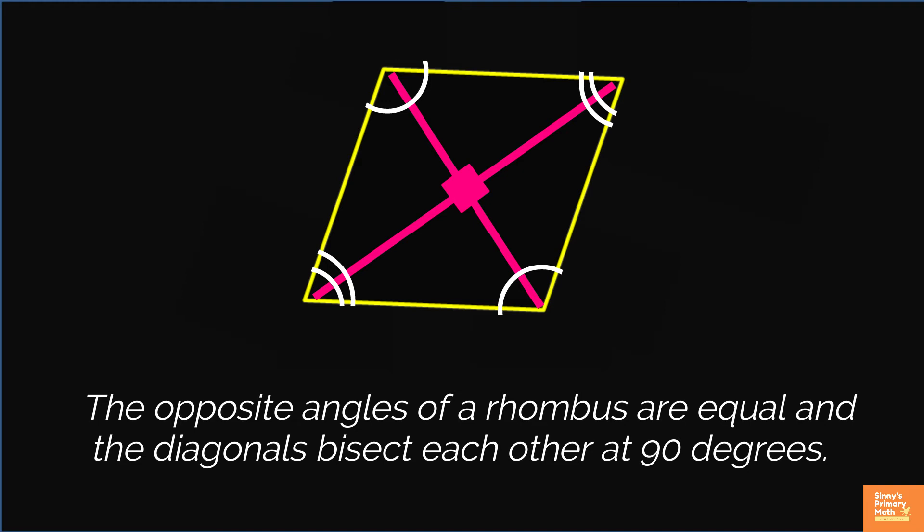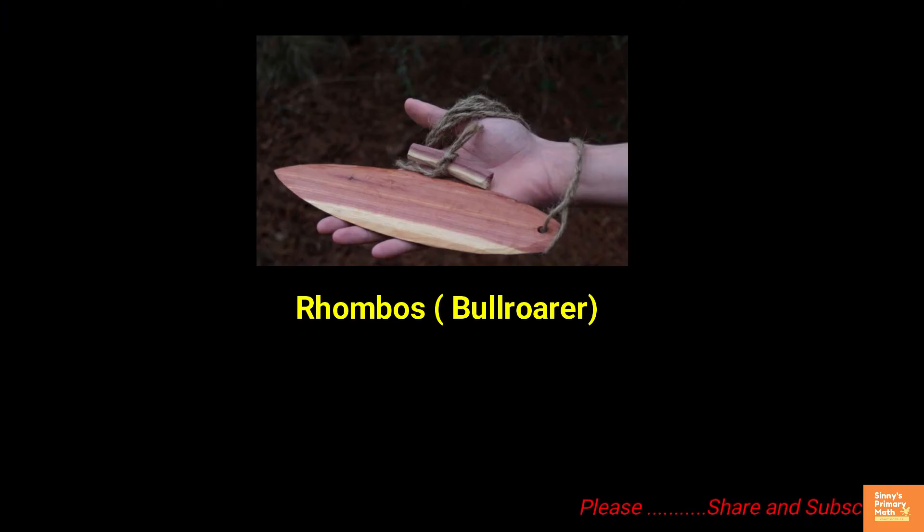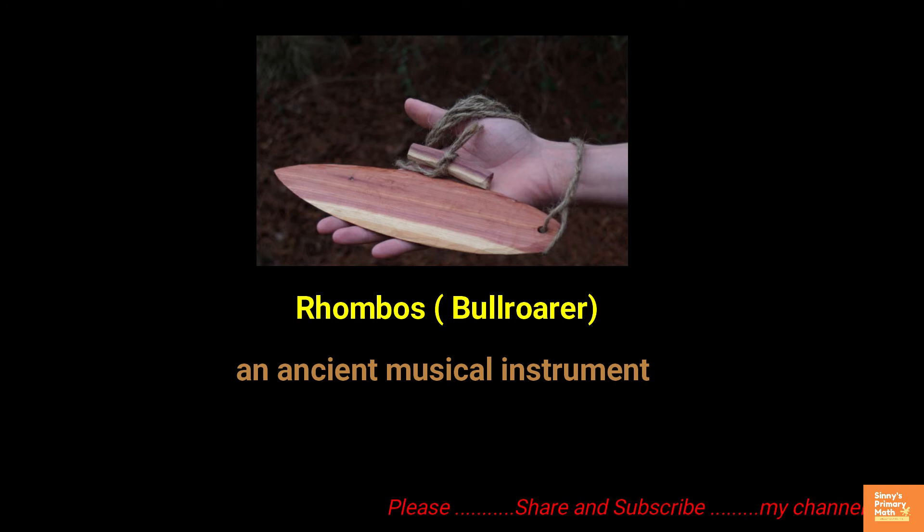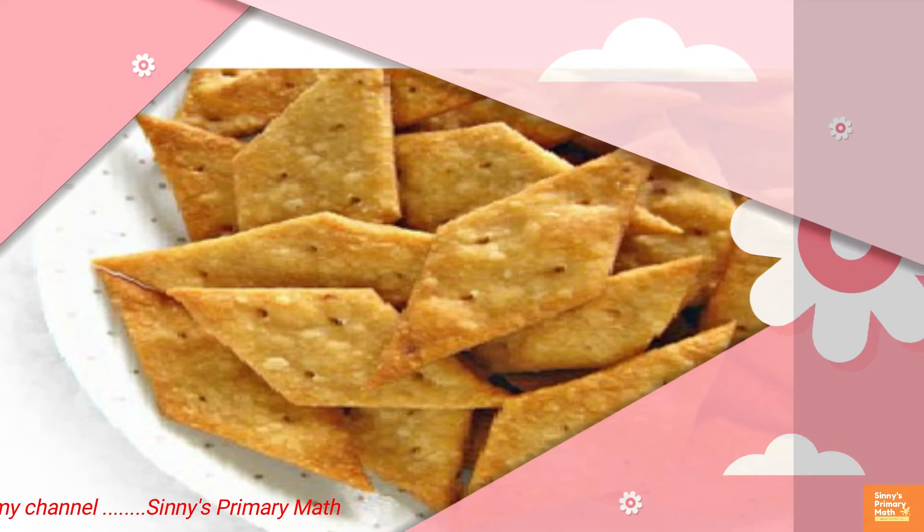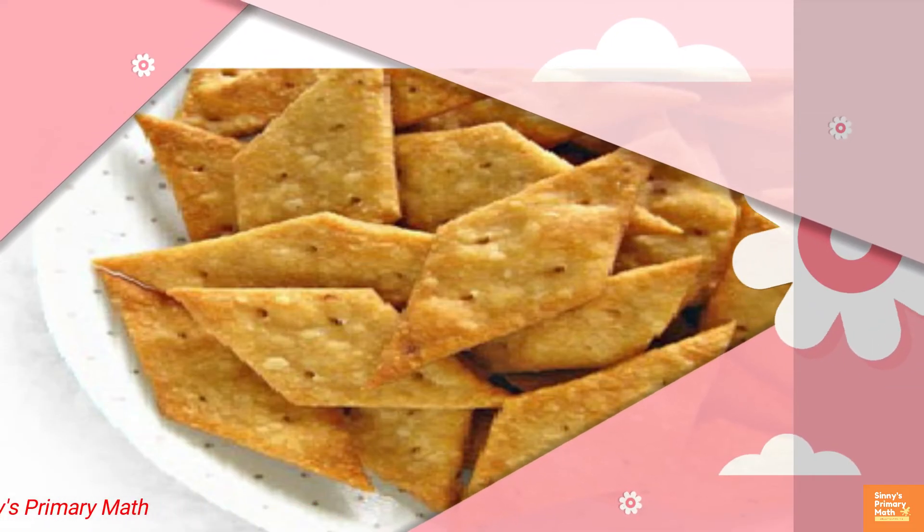Because of its unique properties, rhombus gets an individual identity as a quadrilateral. The term rhombus has been derived from an ancient Greek word rhombus, which actually means something that spins.